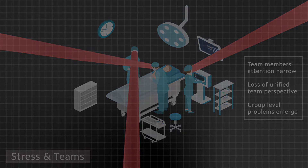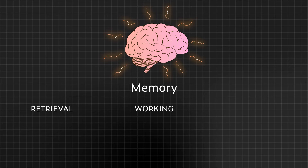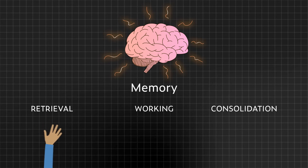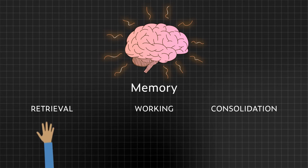Second, stress influences your memory — specifically three components: retrieval, working memory, and consolidation. Not being able to retrieve something you know is in your head is a familiar experience. Add stress or distraction, and you just can't seem to remember until right after you can relax a little.